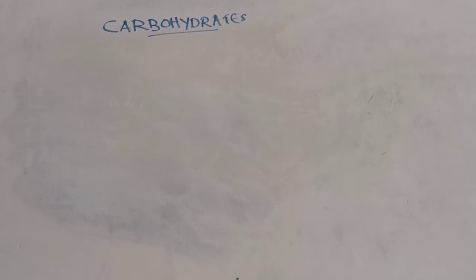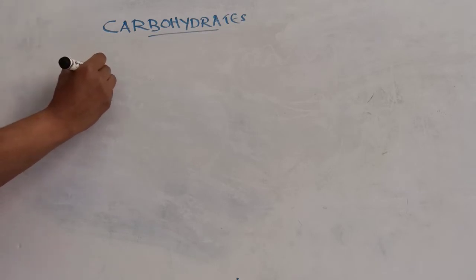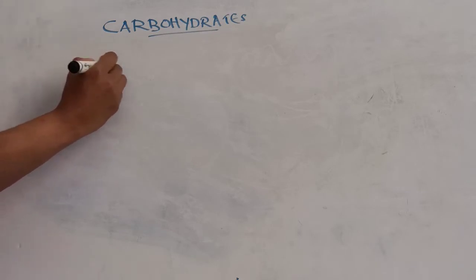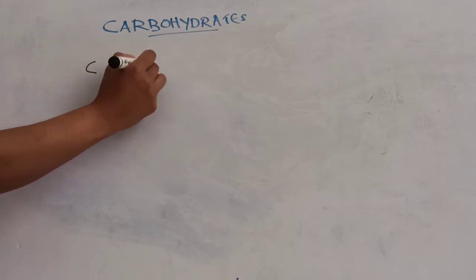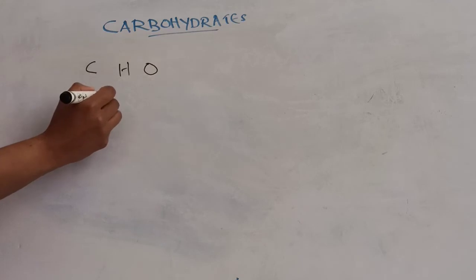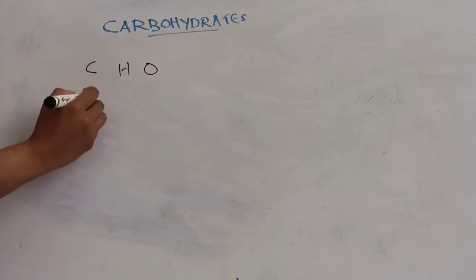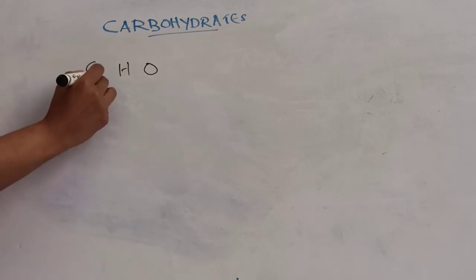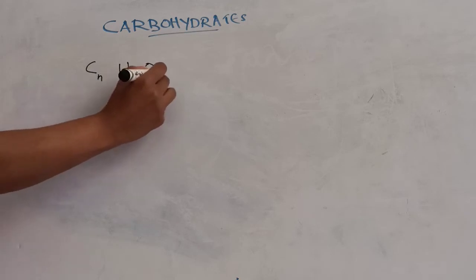Hello everyone, today we will discuss about carbohydrates. Carbohydrates are hydrates of carbon and they contain carbon, hydrogen and oxygen. The majority of carbohydrates have the empirical formula CnH2nOn.